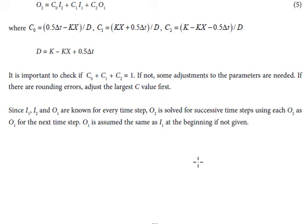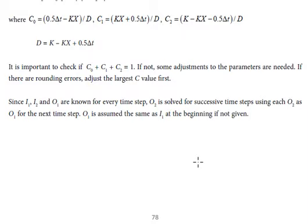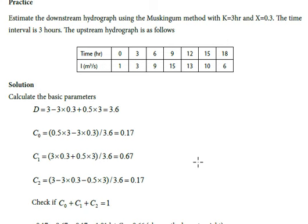Now we will go on to solve one numerical using the Muskingum method. In this numerical, K is 3 hours, X the weighting factor is 0.3, the time interval delta t is 3 hours, and we are supposed to draw a downstream hydrograph.